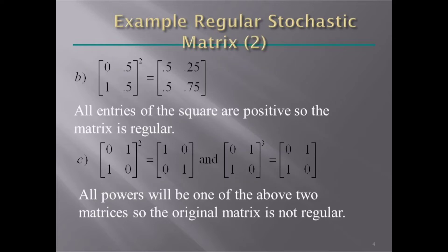In B matrix, when we square the matrix, all entries of the square are positive, so the matrix is regular.